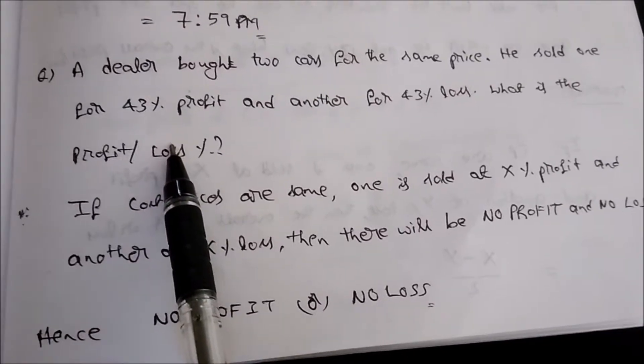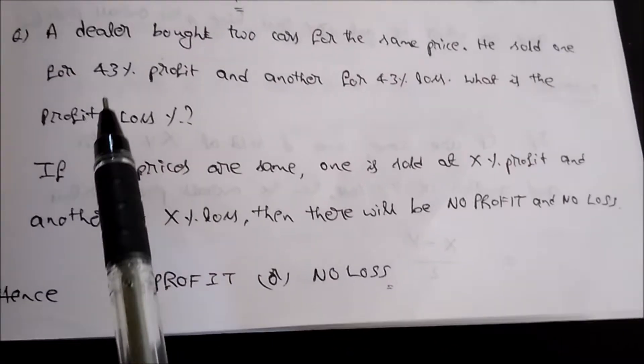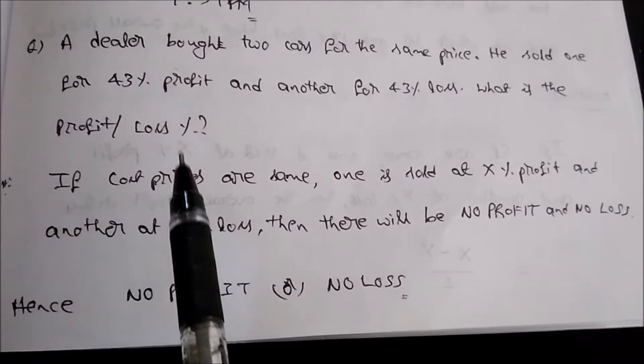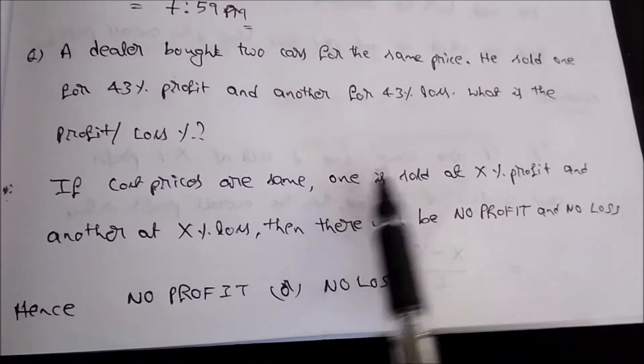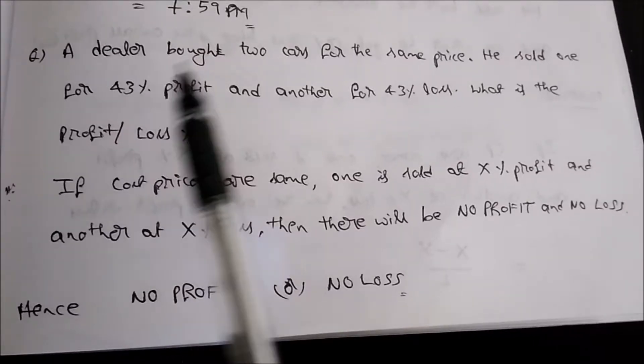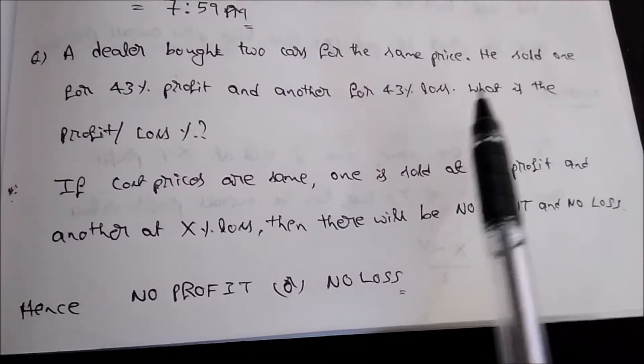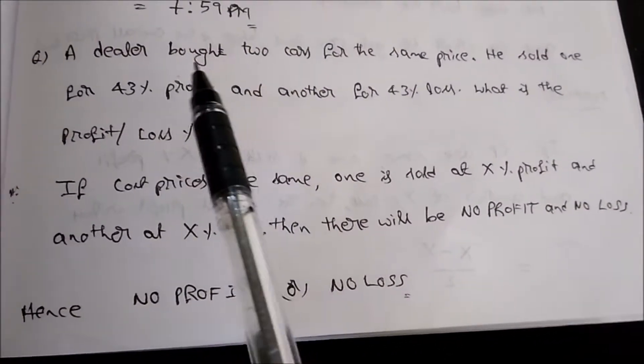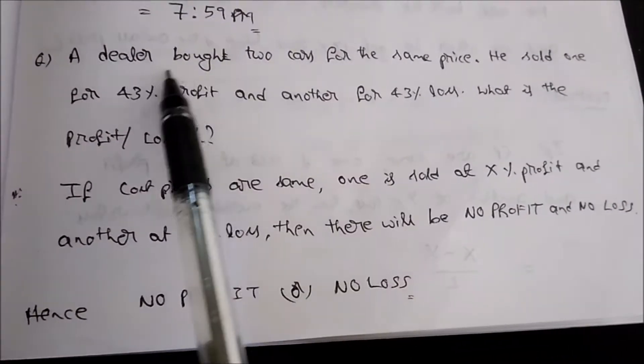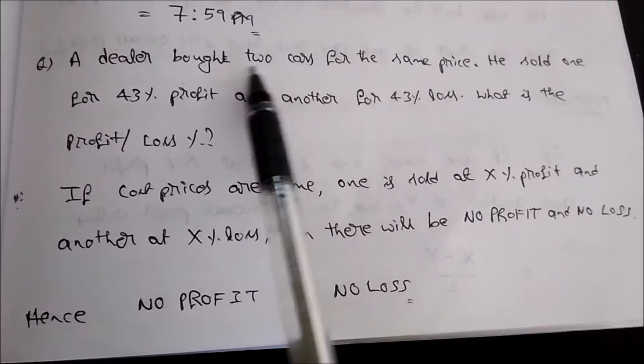This is a straightforward question. There is a simple statement for this. Let me explain: if the cost prices are same and one is sold at x percent profit and another at x percent loss, then there will be no profit or no loss. So here the cost price are same in the question. Cost price of the two cars is same.